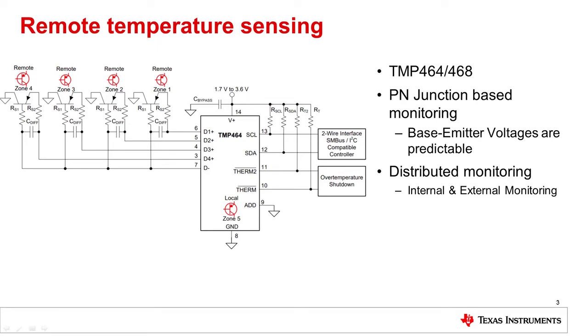Internal monitoring can be done for applications such as FPGAs and processors, which have integrated diodes, and external monitoring can be done for discrete components such as FETs, high-speed ADCs, and DACs. The schematic on the left-hand side of this slide shows a typical setup for the TMP464, which can monitor up to four zones simultaneously.